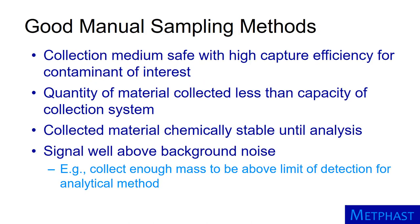A good manual sampling method will have the following characteristics. The collection medium is safe with a high capture efficiency for the contaminant of interest. The quantity of material collected is less than the capacity of the collection system. The collected material is chemically stable until analyzed. The signal is well above background noise — we need to collect sufficient mass to be above the limits of detection of the analysis method.